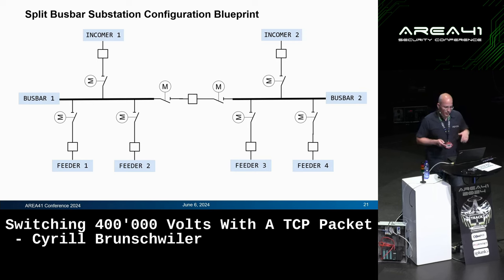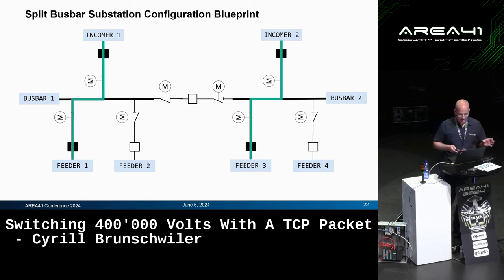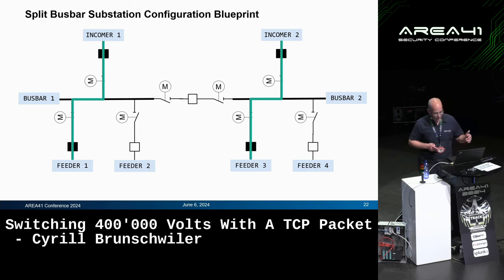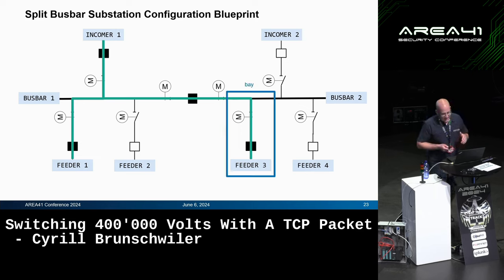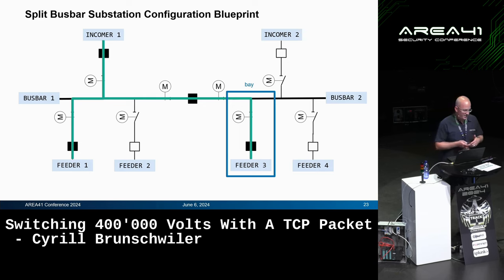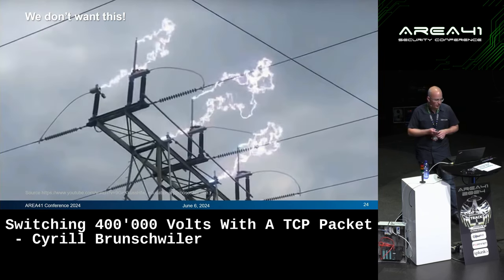When designing a substation, we have incomers, feeders, and bus bars, designed for redundancy — there are many different configurations. Current flows from incomer one to feeder one; if you want to do maintenance on incomer two, you close the center breaker and free up incomer two. Part of this we call a bay. The process within the substation is to keep the bay safe and check if surrounding bays might interfere. We need to be very careful about switching order to avoid shorts and faults — for example, never open a switch before the breaker is open.